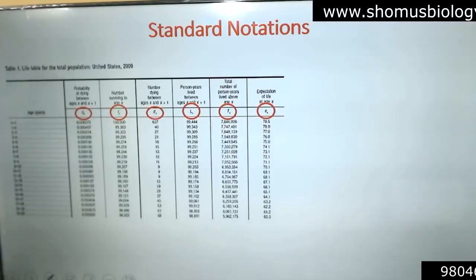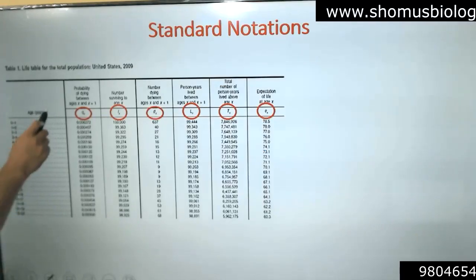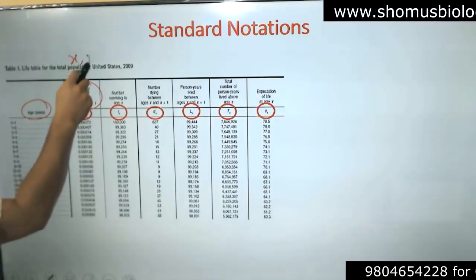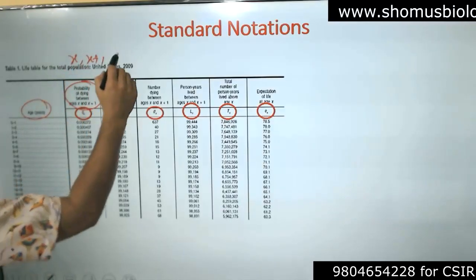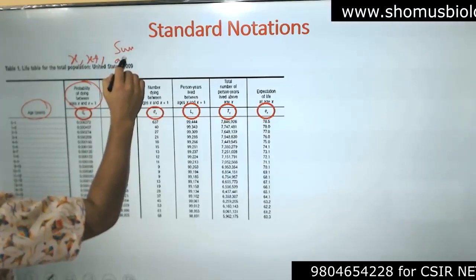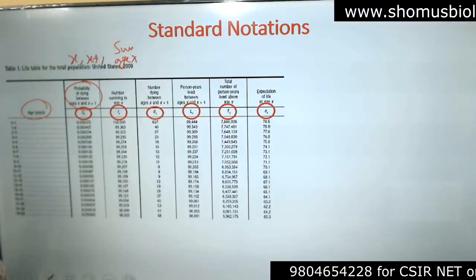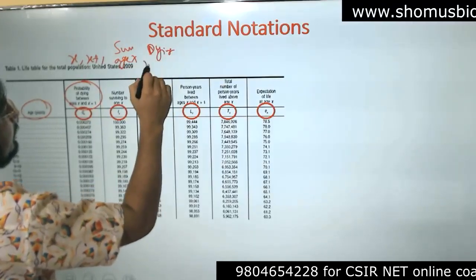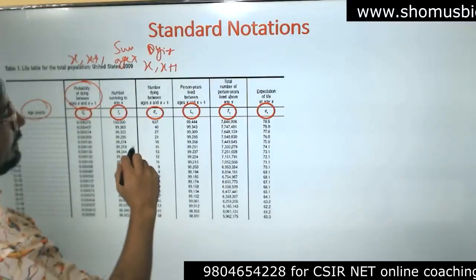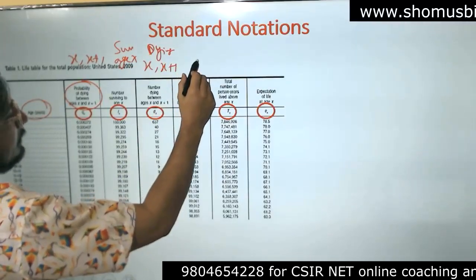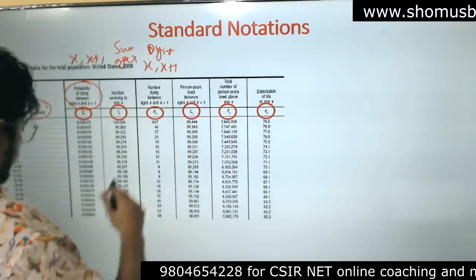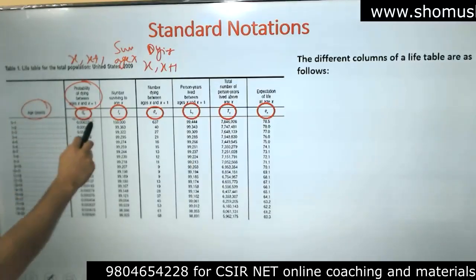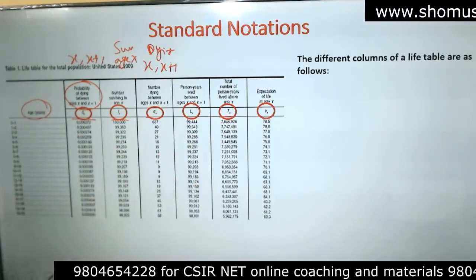The life table looks something like this. It has: period of age in years; probability of dying between age x and x+1; number of survivors at age x; number dying between age x and x+1. These are represented in short form as Qx, Lx, Dx, Tx, and Ex.